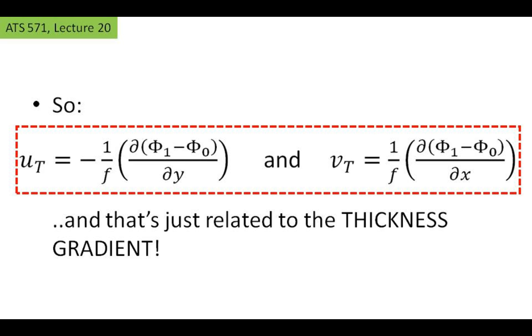So that's pretty straightforward. We can do some rearranging and find out that thermal wind UT and VT is just equal to the gradient of the thickness. Right? That's the...